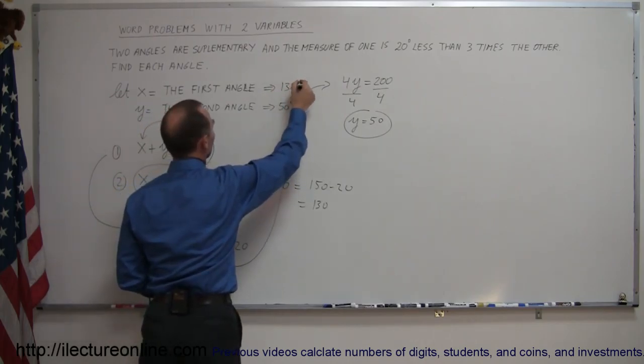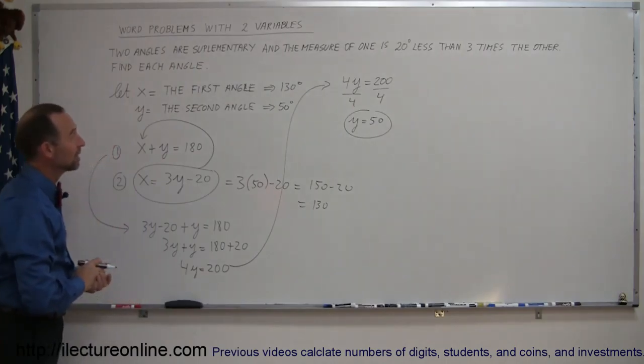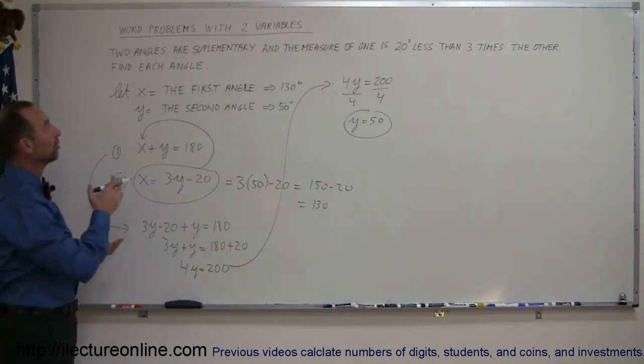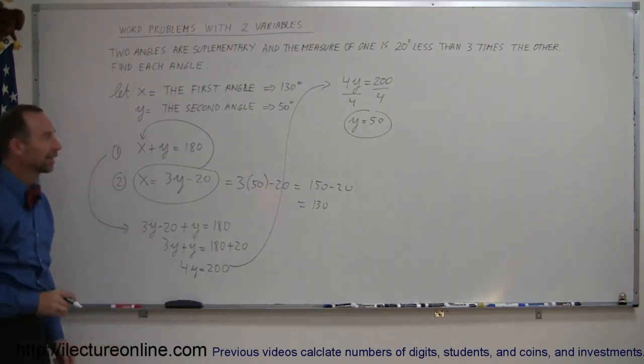Again, it doesn't matter which way it went, as long as they add up to 180. So one is 50, the other one is 130 degrees. And that's how you solve problems like that.